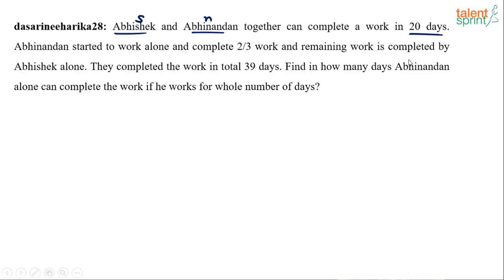So they together can complete the work in 20 days means what? 1 by S plus 1 by N equals to 1 by 20. When two persons are working together they will take AB by A plus B days. So here we can say SN by S plus N equals to 20. We know that together they will take 20 days. This is equation number 1.